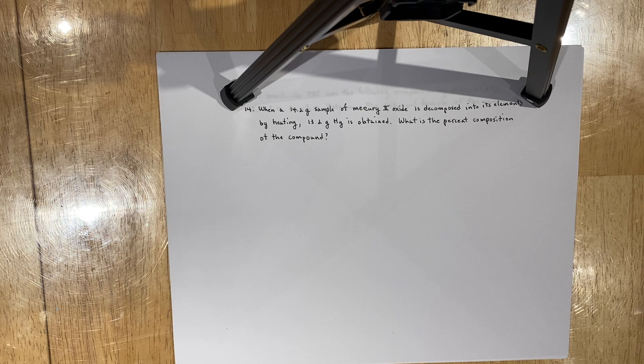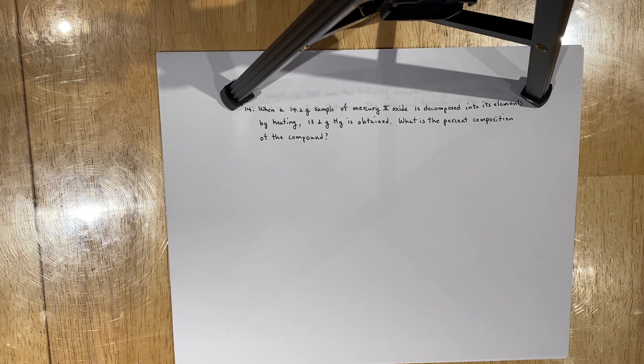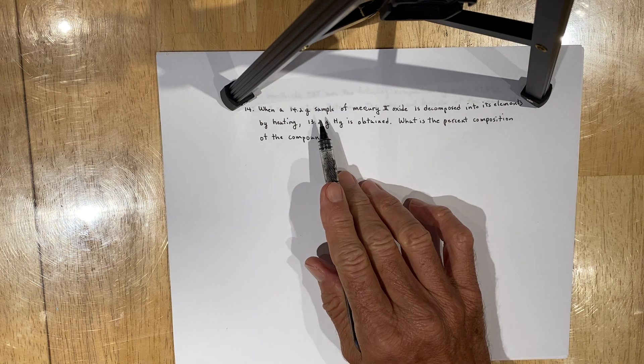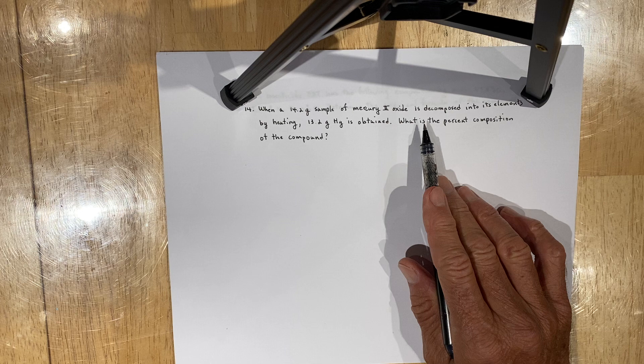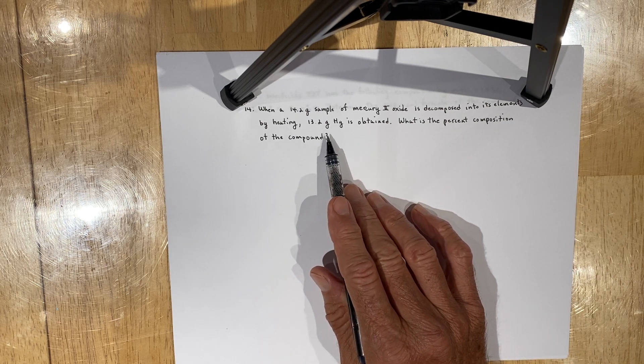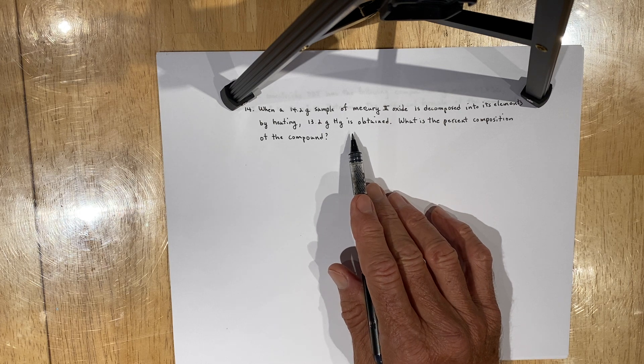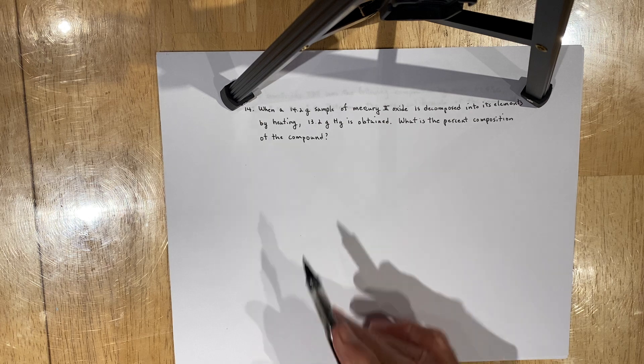So today I'd like to review with my honors chemistry students problem 14, which is a percent composition problem. It reads, when a 14.2 gram sample of mercury 2 oxide is decomposed into its elements by heating, 13.2 grams of mercury is obtained. What is the percent composition of the compound?